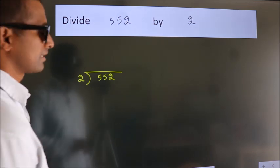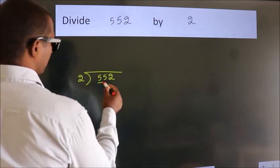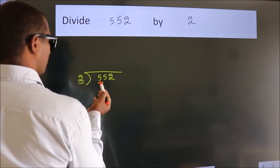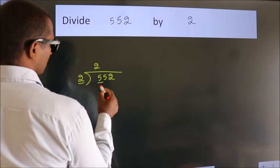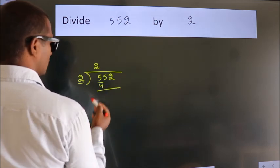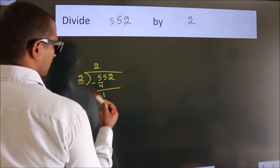Next, here we have 5, here 2. A number close to 5 in the 2 table is 2 times 2, which is 4. Now we should subtract. We get 1.